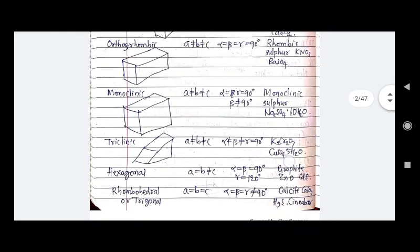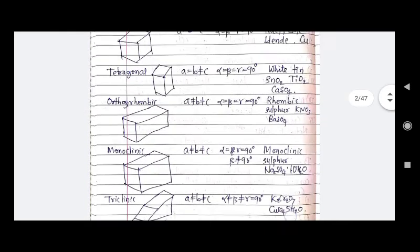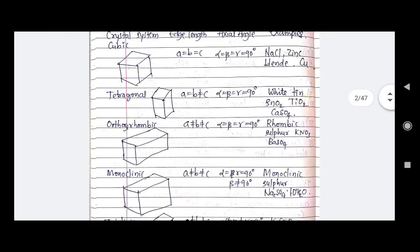The first is cubic: edge length a = b = c, and axial angles alpha = beta = gamma = 90°. Examples are NaCl, zinc blende, and copper. Then comes tetragonal: a = b ≠ c, and alpha = beta = gamma = 90°. Examples are white tin, SiO2, TiO2, and CaSO4.